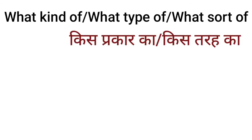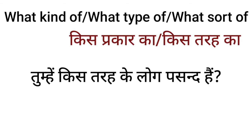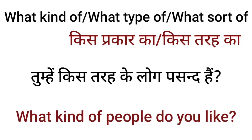Next phrases are 'what kind of,' 'what type of,' and 'what sort of.' All three mean 'kis prakar ka' or 'kis tarah ka.' For example, 'tumhe kis tarah ke log pasand hain' means 'What kind of people do you like?'